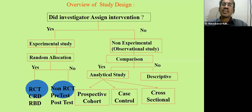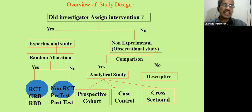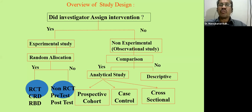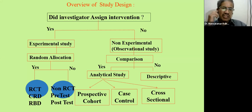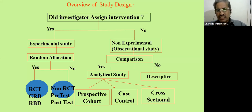Experimental studies are very costly and have to be conducted rigorously. Usually, as a researcher when there is no funding, we go for non-experimental studies. In non-experimental studies, to choose the study design, you have to think: does your study include comparison? Is there any comparison between two groups? You may compare people who are exposed to a certain environment versus those not exposed — this is called an analytical study. If there is an element of comparison, it is an analytical study.